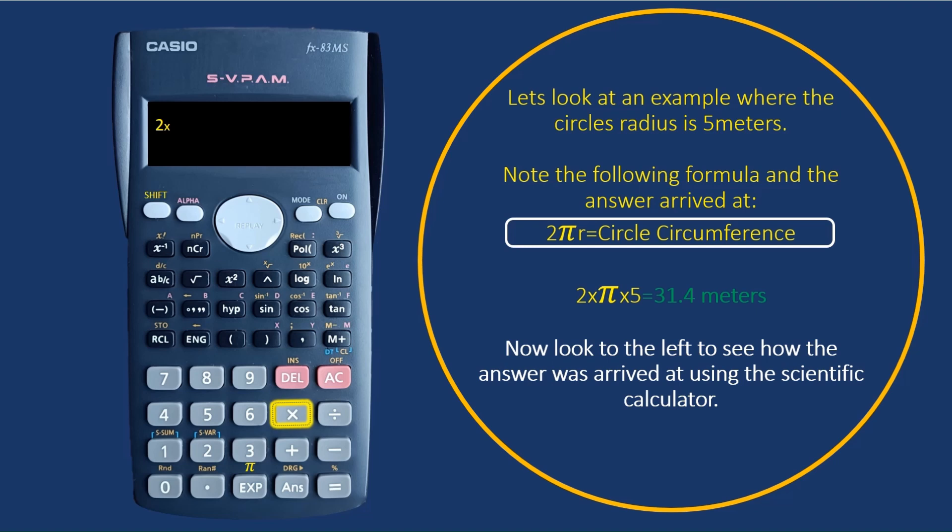Here you see the buttons highlighted on the calculator as you're calculating. Note that you have to use the shift button in the top left-hand corner in conjunction with the button in the bottom row where you have the π symbol to get π.